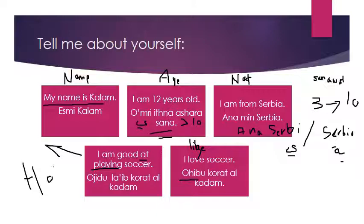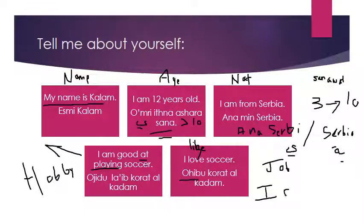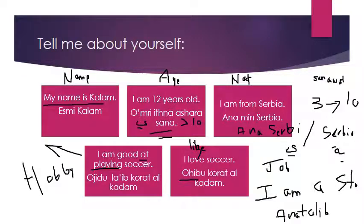You can also introduce your job or work. 'What's your job now?' — 'I am a student' is أنا طالب if you're a boy, or أنا طالبة if you're a girl. So here you introduced yourself regarding your name, age, nationality, hobbies, and job. These should be studied verbally and practically, because later we will do a Socrative quiz on this lesson.